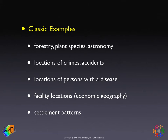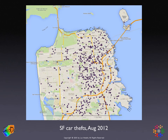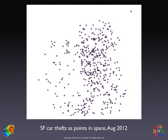Let me show you some examples to set the stage. Here is a slide with the actual locations of all the car thefts in San Francisco in August 2012. You can download this data from the San Francisco Open Data site and then plot it. As you can see, these points are actually situated on the road network, but typically in classical spatial point pattern analysis, the points are treated as floating in space — so this would be the more traditional classical point pattern representation.